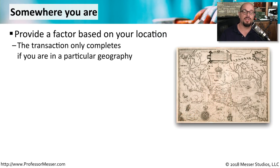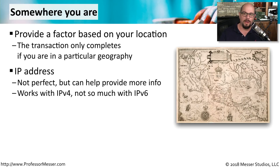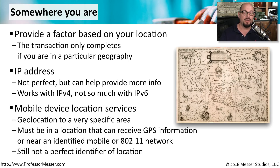The authentication factor of somewhere you are provides details of your geographical location. When you log into a system, it knows exactly where you are, and the system can decide whether that location is appropriate for authentication. One broad use of this is an IPv4 address, though those don't provide great geographic accuracy. Mobile devices, however, do provide a great deal of geographic accuracy and can allow or disallow authentication based on that specific location.